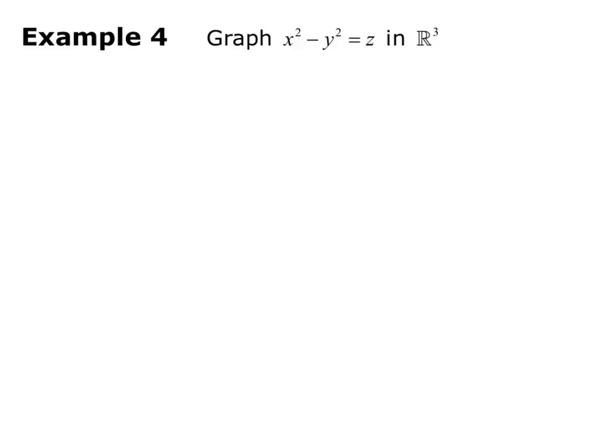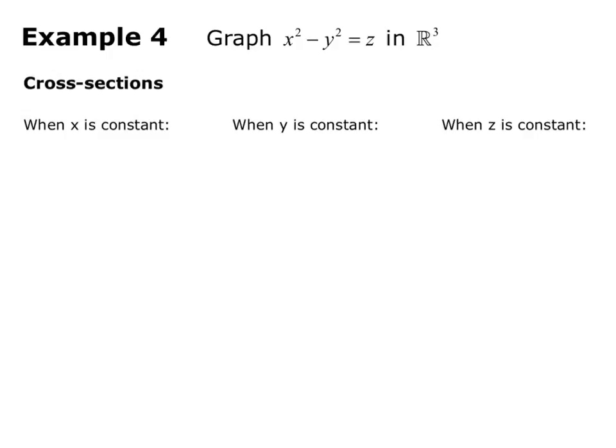Now we want to graph x squared minus y squared equals z in R3. This looks similar to the last equation, but it's actually much more complicated because of that subtraction. We follow the same pattern of finding cross sections: when x is constant, when y is constant, and when z is constant.